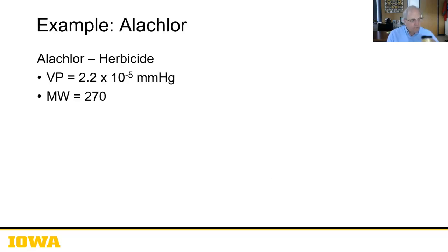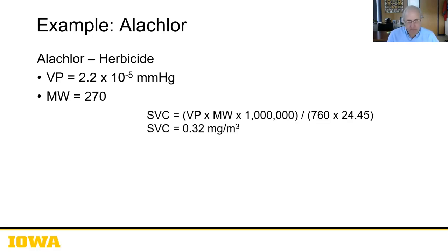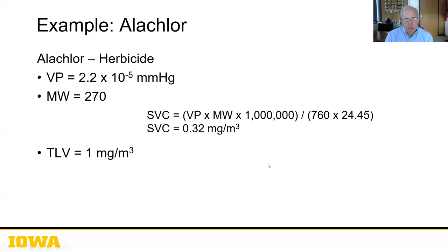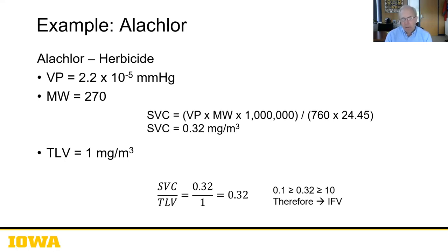Here's a quick example with alachlor: vapor pressure 2.2×10⁻⁵ mmHg, molecular weight of 270. Using the equation with 24.45 liters per mole at room temperature, you end up with 0.32 mg/m³ as the saturation vapor concentration. The TLV is 1 mg/m³. So the ratio is 0.32 divided by 1, giving 0.32 — which is between 0.1 and 10. Therefore, it's an IFV-designated compound.